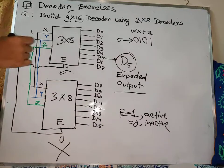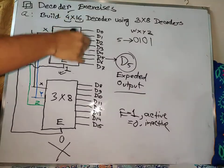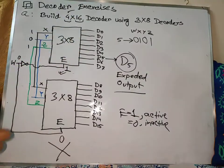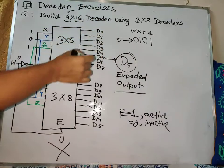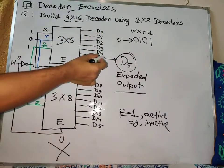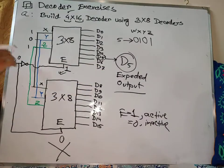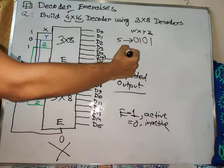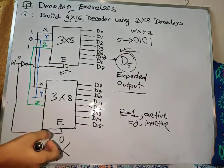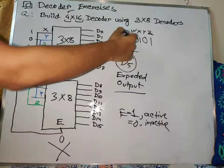Since X, Y, and Z are 1, 0, 1 — that is because 1, 0, 1 is the value of 5. This includes the value 0, 0, 1, 0, 1 which is the value 5. So if Y is 0, 0, 1, then D is active. So output D5 has changed to completely correct.